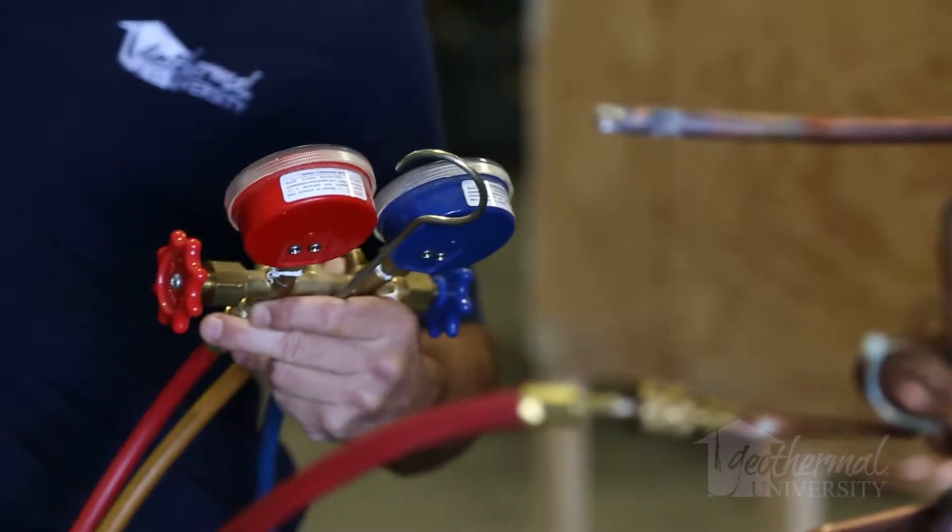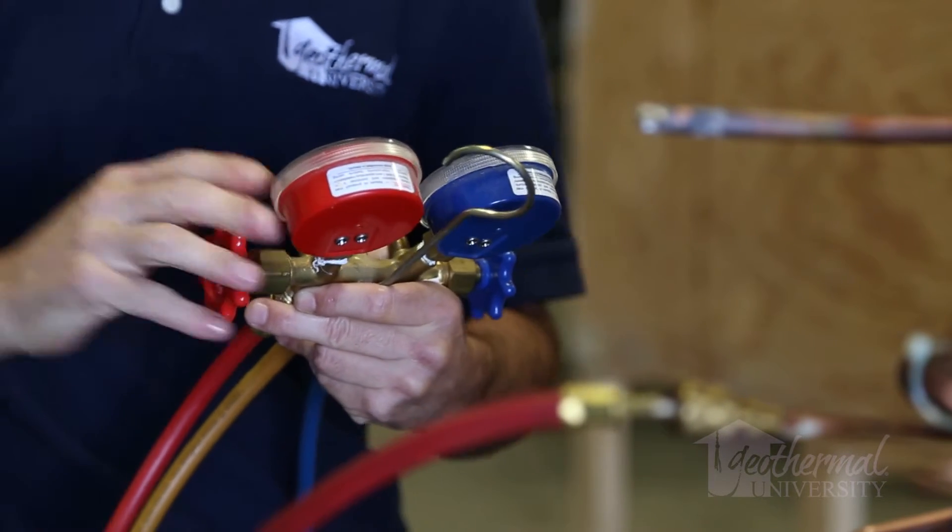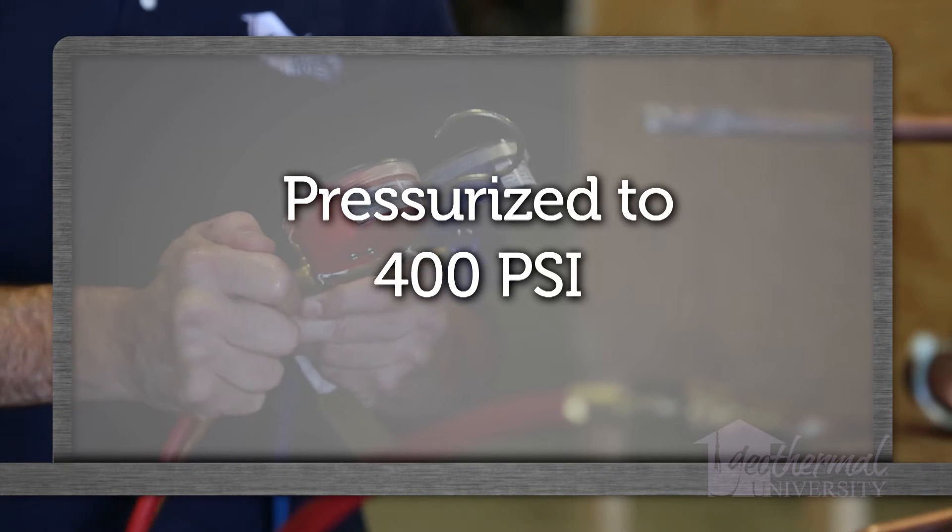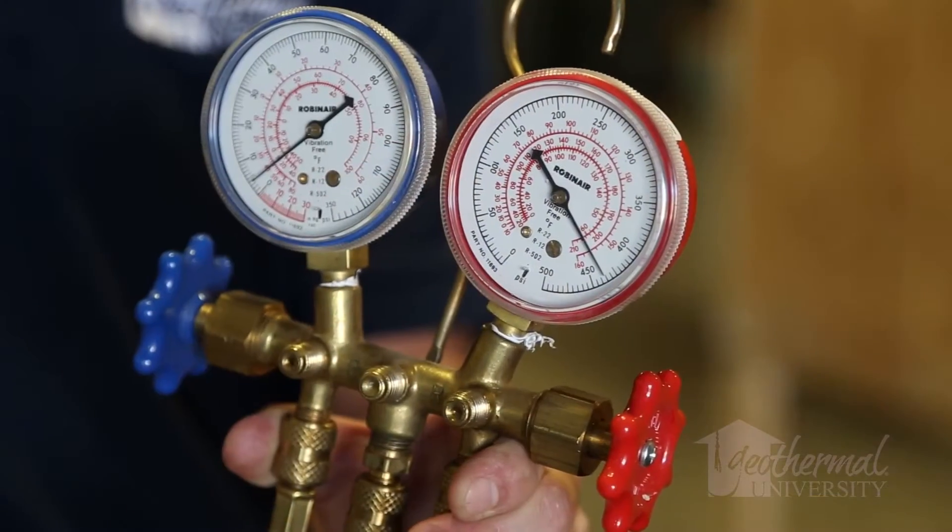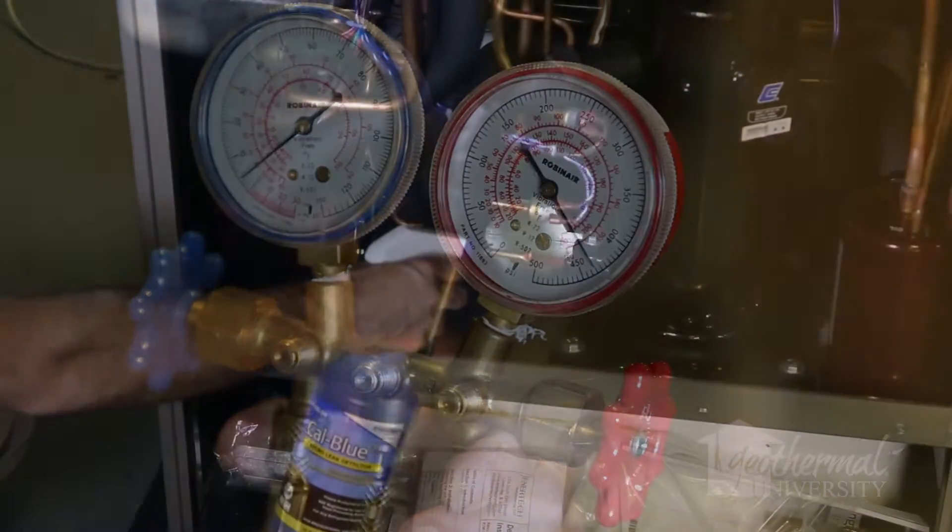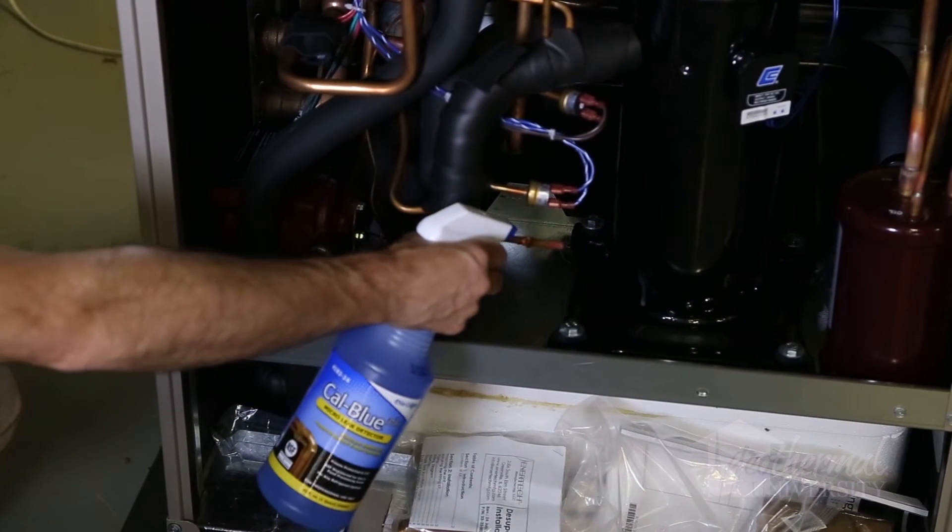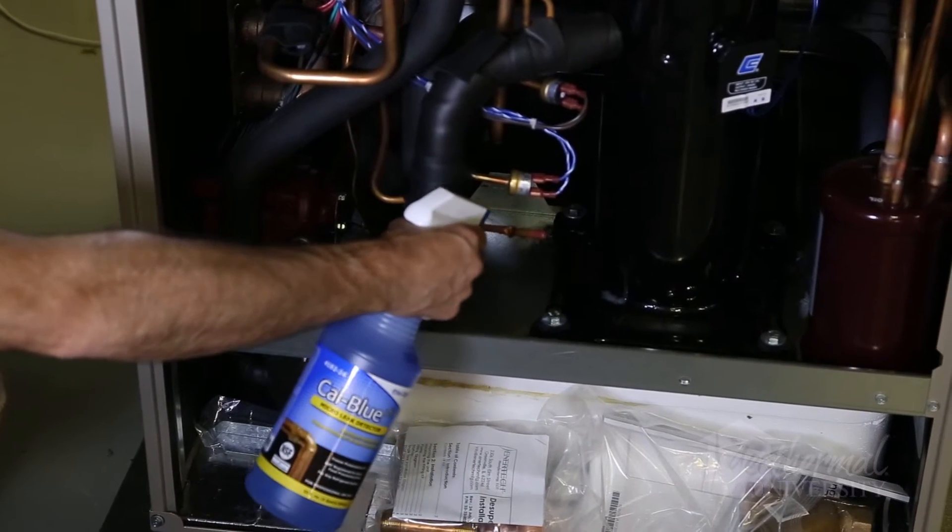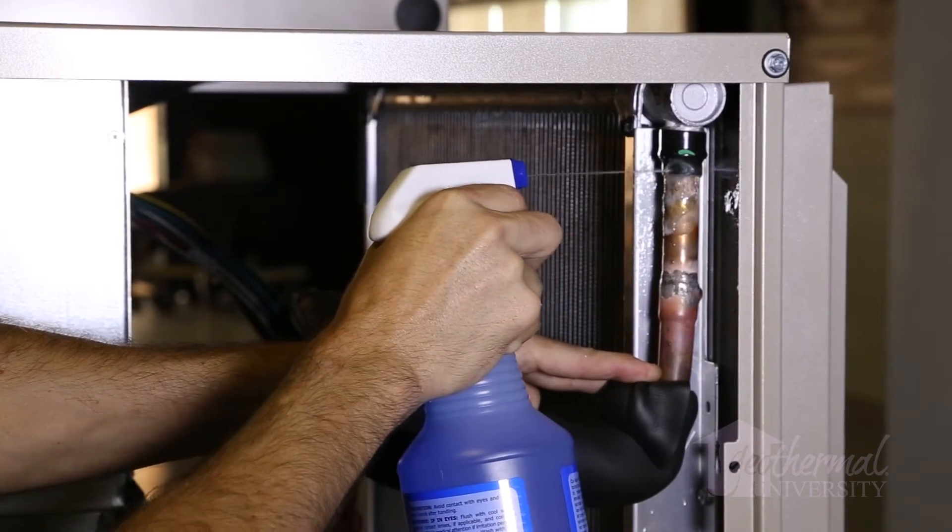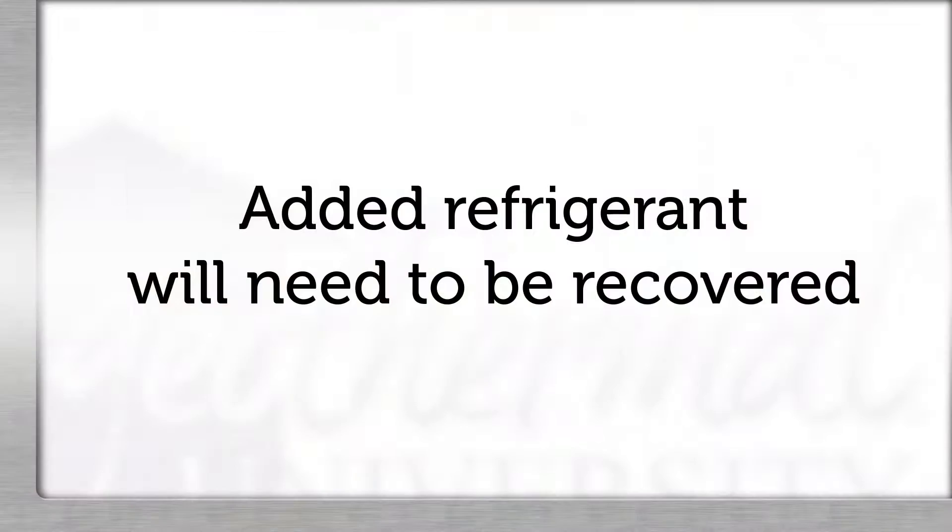Standing leaks are usually large leaks that can be detected with the system off. If the system is flat, the technician may be able to leak check with nitrogen only. The system can be pressurized to 400 psi. It is permissible to add a trace amount of refrigerant along with the nitrogen to perform leak detection. If the system is nearly or mostly flat, we do not recommend adding a full charge of refrigerant or topping off the unit, since a significant leak is likely present and added refrigerant will need to be recovered.